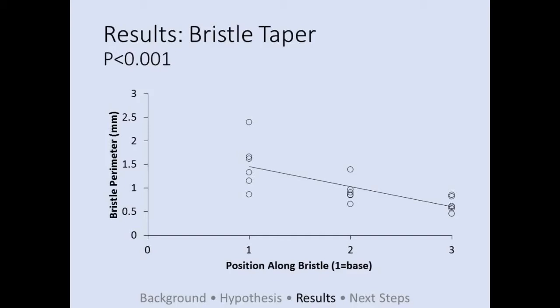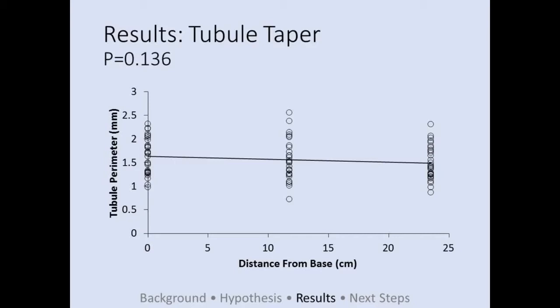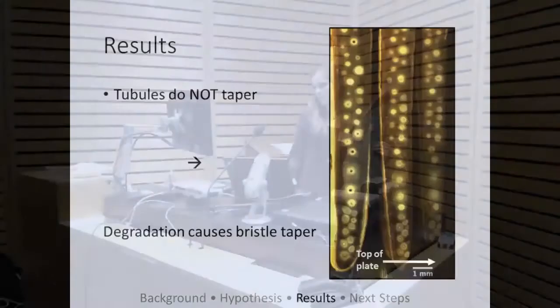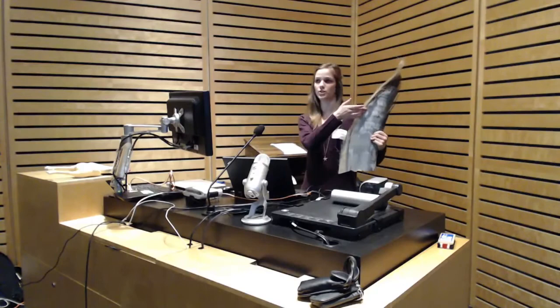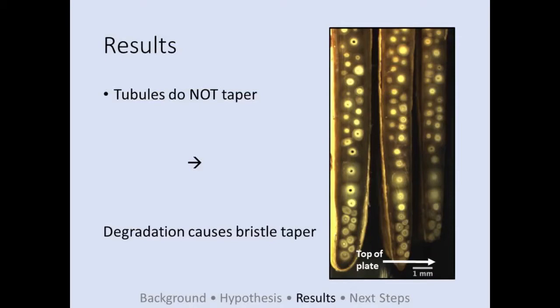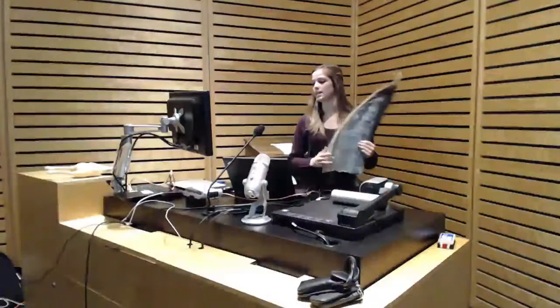By taking cross-sections, I've looked at the tubule taper in the plate and determined that there's no significant taper — their perimeter is pretty much consistent all the way through the baleen plate until it's exposed. I did that by taking three cross-sections from the base all the way down to right before the tubules are exposed as bristles. You can see that picture there shows the tubules all the way through. I can actually track the same tubule through and see how its perimeter changes. By determining they don't taper, my second hypothesis is supported: it's degradation causing the bristle taper.